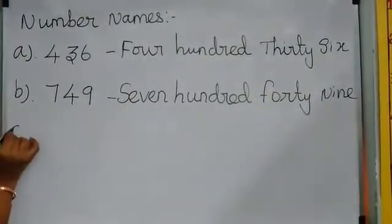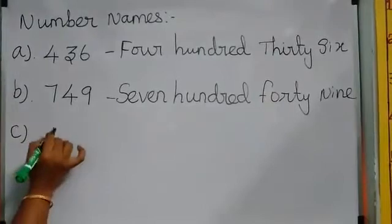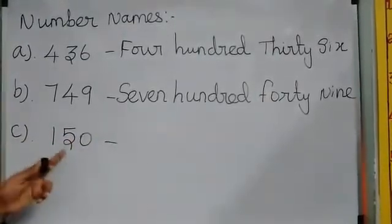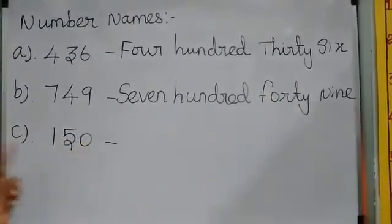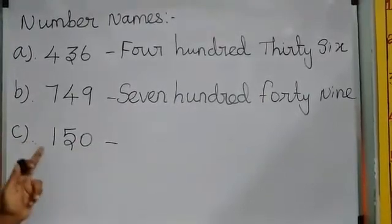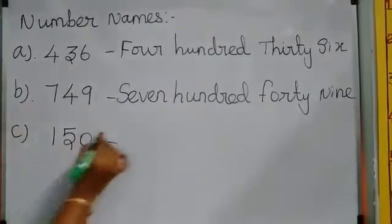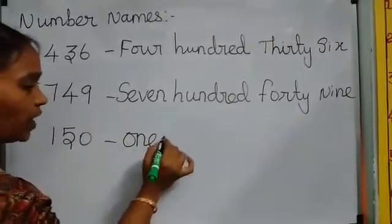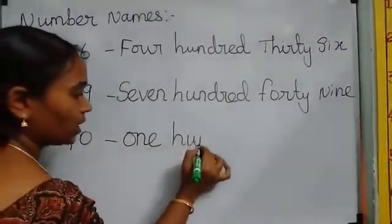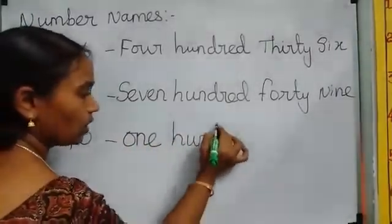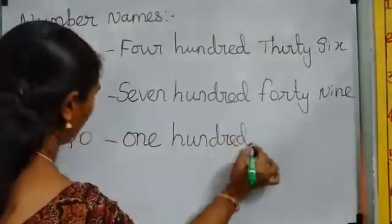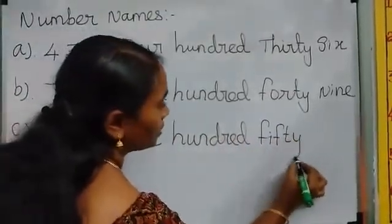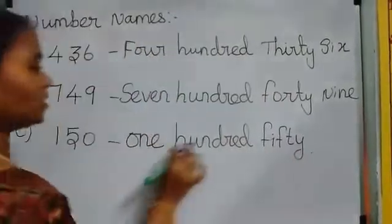The next one: 1, 5, 0. How to read that number? 150. So 1 — O-N-E, H-U-N-D-R-E-D, so 100. Plus 50 — F-I-F-T-Y. That is 150: one hundred and fifty.